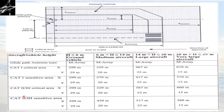For CAT 2 and 3 critical area: X is 299 meters and Y is 29 meters, which is the same. For CAT 2 and 3 sensitive area: X sensitive is 299 meters and Y sensitive is 29 meters. For ground vehicles the values remain the same, but as we move to medium, large, and very large aircraft there are slight variations in the table which are important to notice.